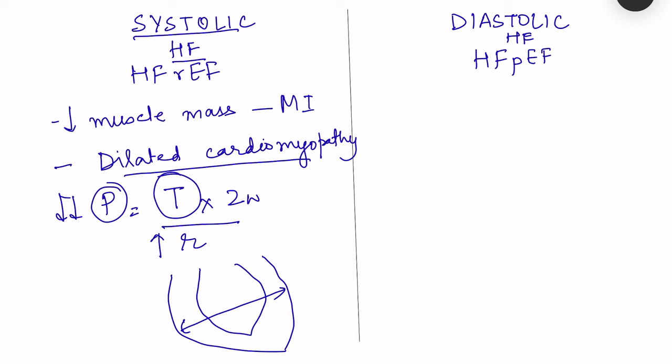In diastolic heart failure, the heart cannot relax properly. This can happen in restrictive cardiomyopathy, where there is decreased compliance of the ventricles. They are not able to relax properly, so the filling of the ventricles is less, causing decreased cardiac output.